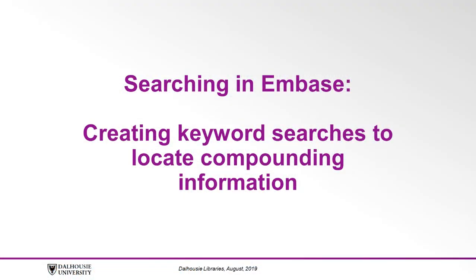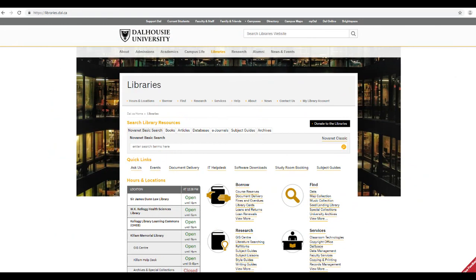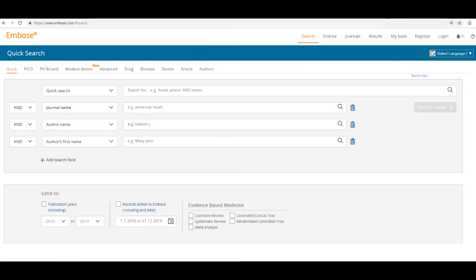Embase can also be used to locate compounding information, but searches for compounding topics in this database may yield large numbers of results from a wide variety of publication types. CINAHL, on the other hand, is great for locating articles from specific pharmacy compounding journals. If you choose to search Embase, it can be accessed through the Dalhousie Library's homepage just as we accessed CINAHL. However, please note that the process for creating keyword searches in Embase will differ from the process in CINAHL.